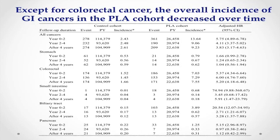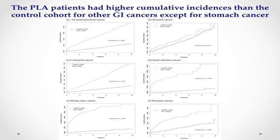In this table, we can see that except for colorectal cancer, the overall incidence of GI cancer in the pyogenic liver abscess cohort decreased over time. In the cumulative incidence, we can see the pyogenic liver abscess patients have higher cumulative incidence than the control cohort for other GI cancers, except for stomach cancer.